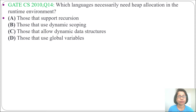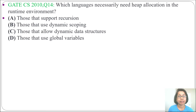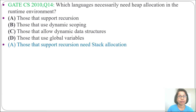Option A: those that support recursion. Those that support recursion need stack allocation, not heap allocation. So option A is wrong. Next, option B: those that use dynamic scoping. Dynamic scoping is not related to heap allocation.